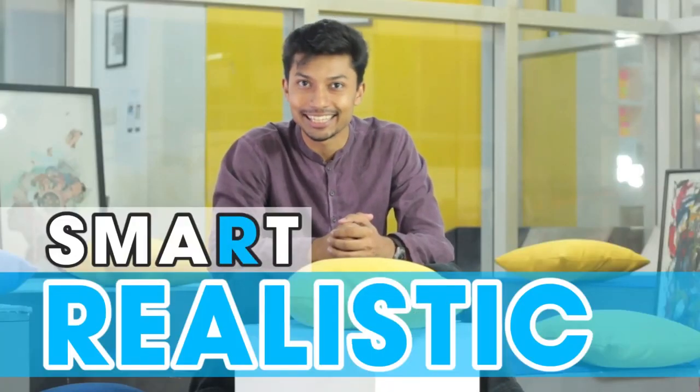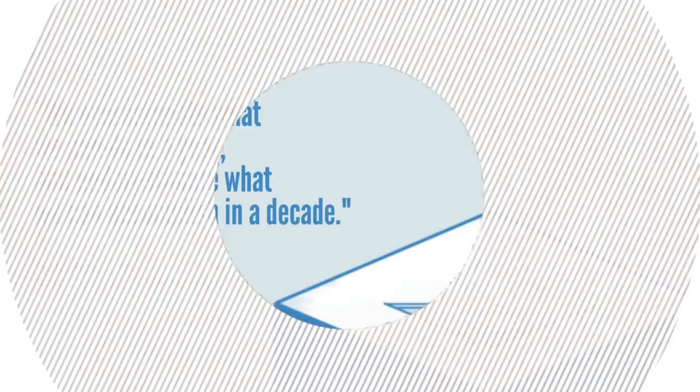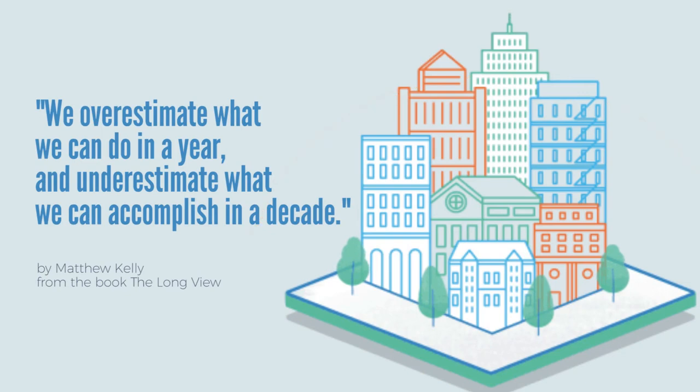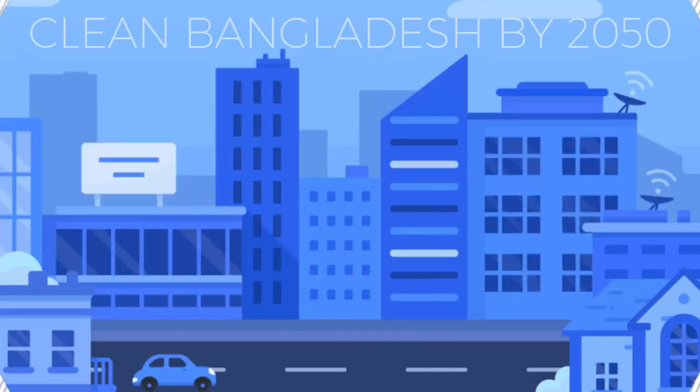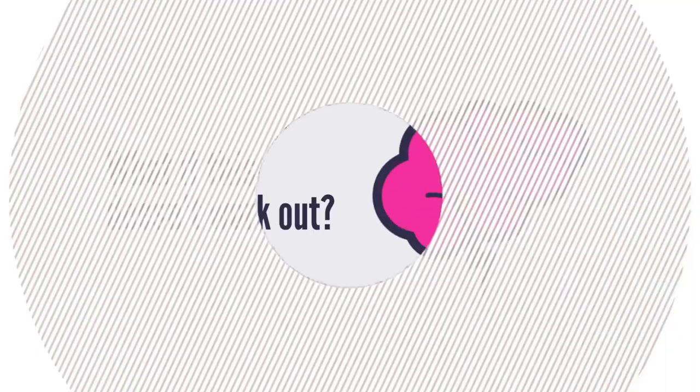R stands for Realistic. You have to think carefully about whether your goal is realistic. If you set an unrealistic goal, it will not be achievable. Realistic is very important — your goal must be grounded in what is actually possible.